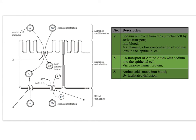The absorption of amino acids into the blood follows the same principle as the absorption of glucose. Sodium ions are actively transported out of the epithelial cell, creating and maintaining a low concentration of sodium inside the epithelial cell. Sodium ions then move from the lumen of the small intestine into the epithelial cell down their concentration gradient, bringing amino acids with them — they are coupled together through a co-transport protein.